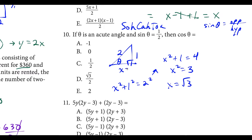So square root 3 is the missing adjacent side. Cosine of angle theta is the ratio of the adjacent side over the hypotenuse — the adjacent side is square root 3, and the hypotenuse is still 2. So we're going with choice D.